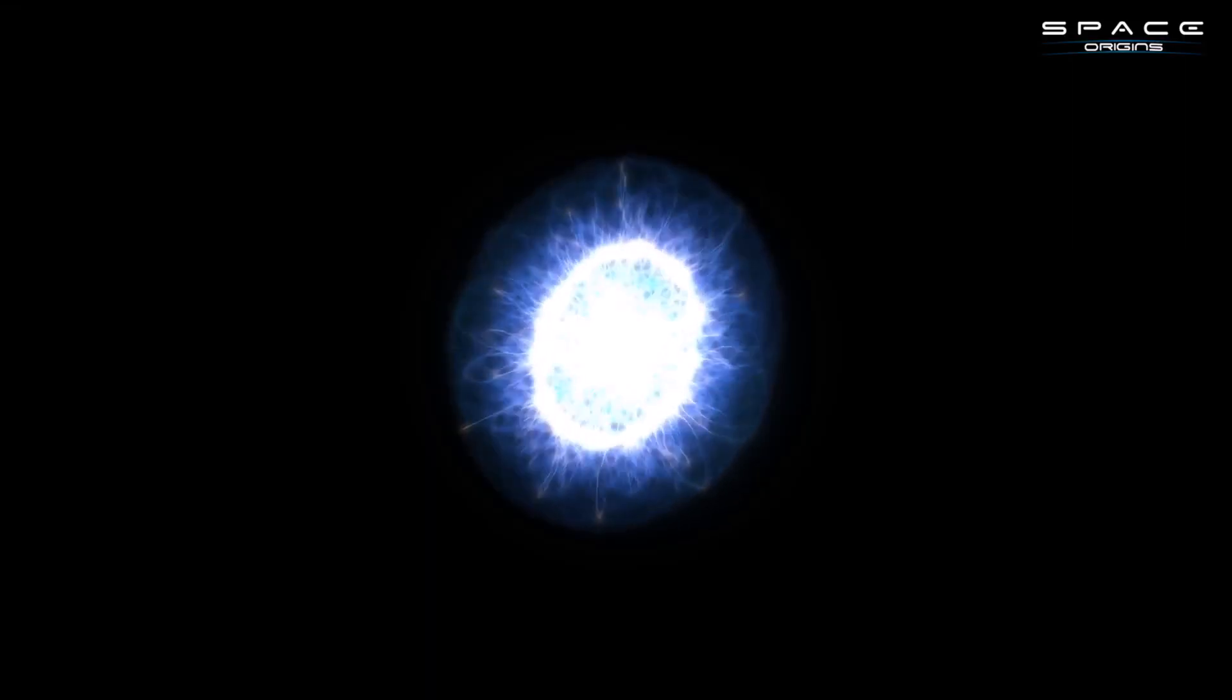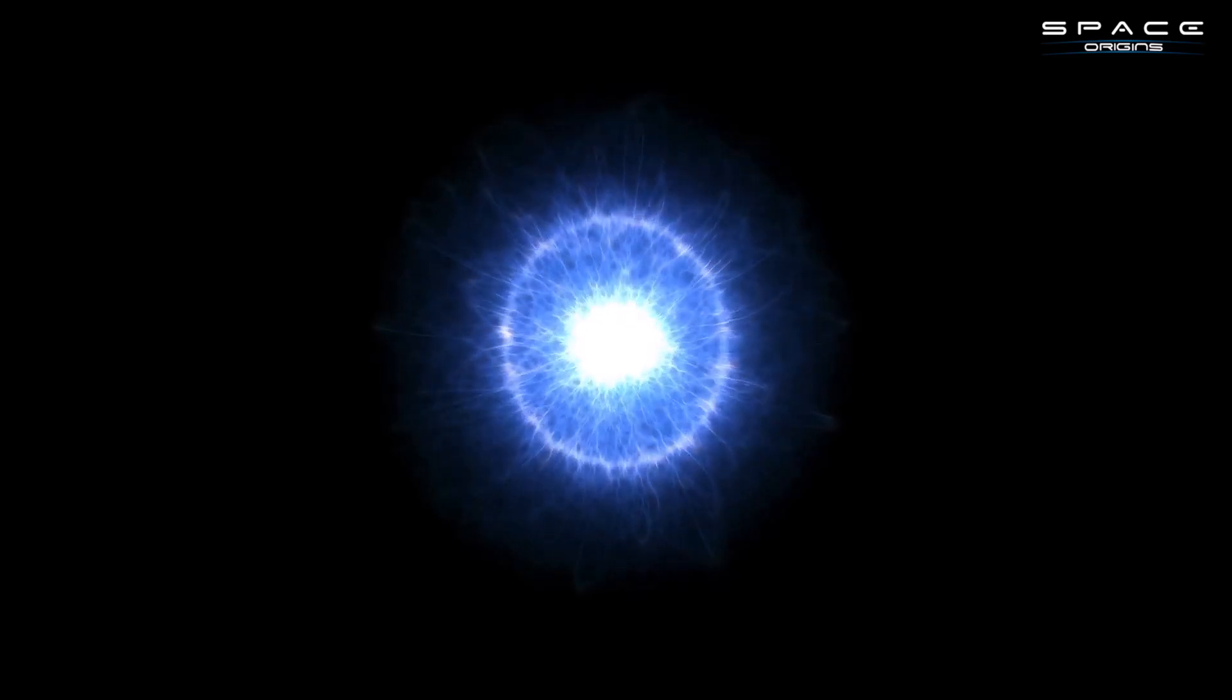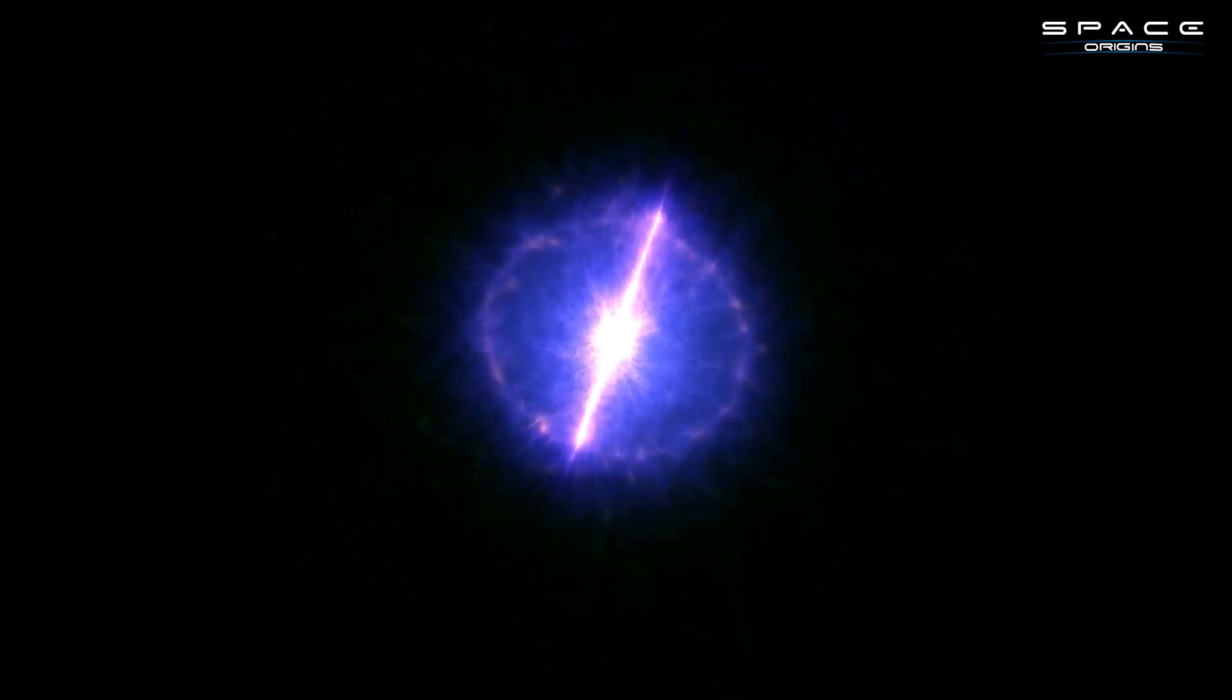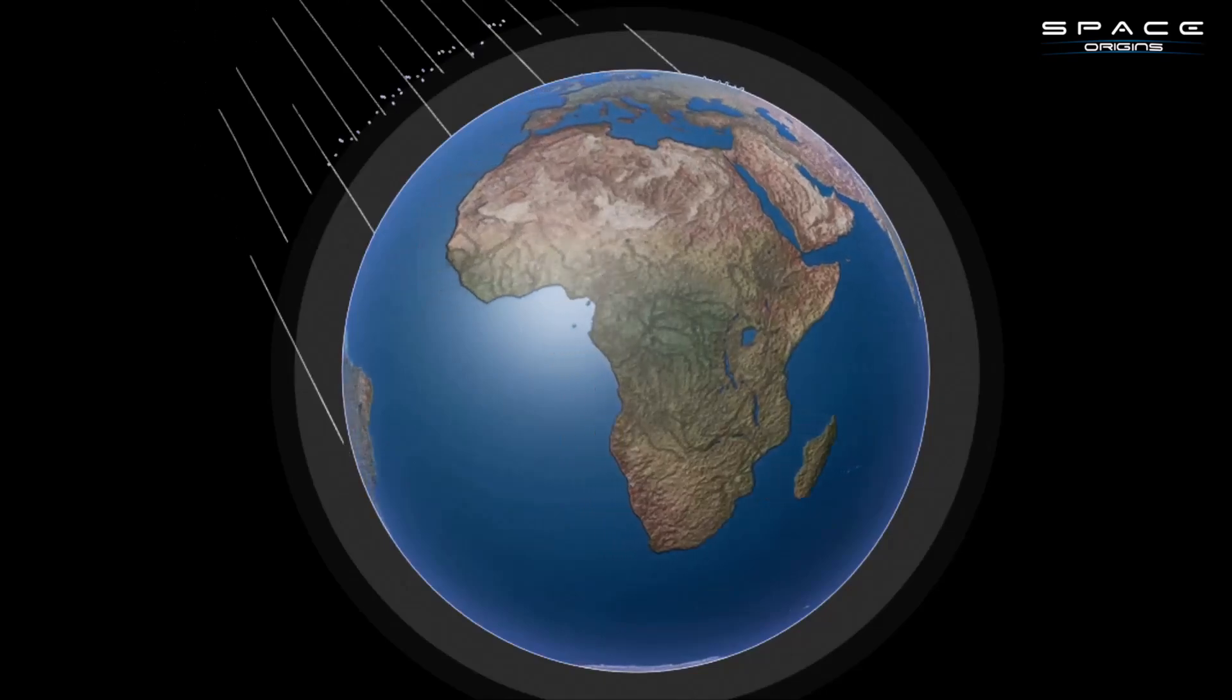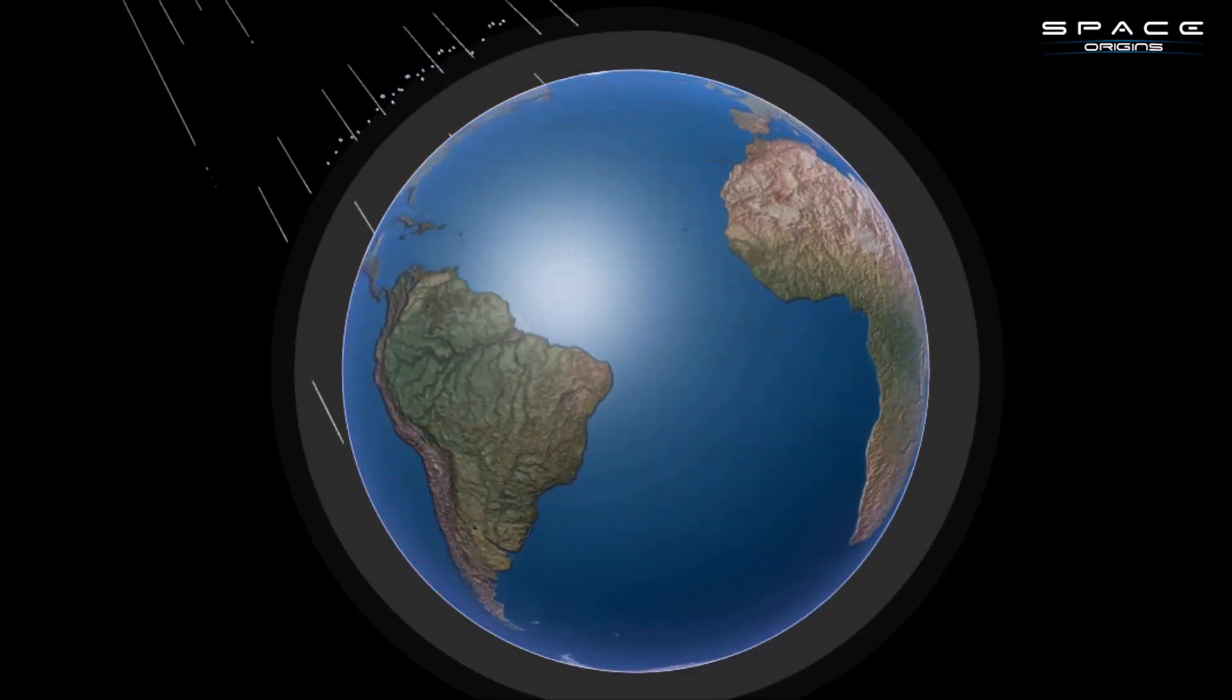The gamma-ray burst, traveling billions of light-years from a galaxy behind our Milky Way, arrived on Earth, carrying an immense amount of energy. As these high-energy gamma rays interacted with the upper layers of our atmosphere, they caused disturbances in the electric field.